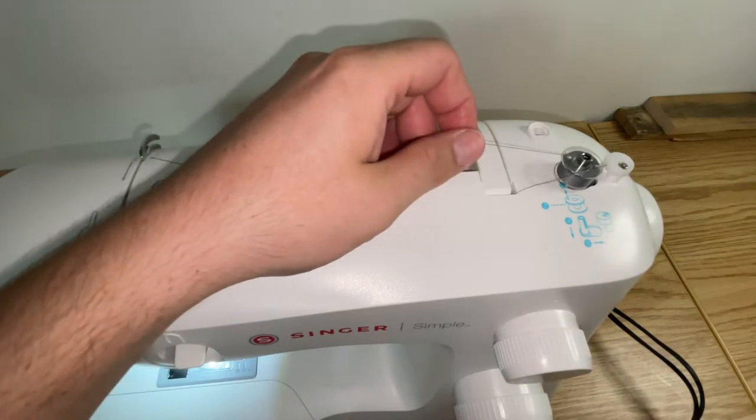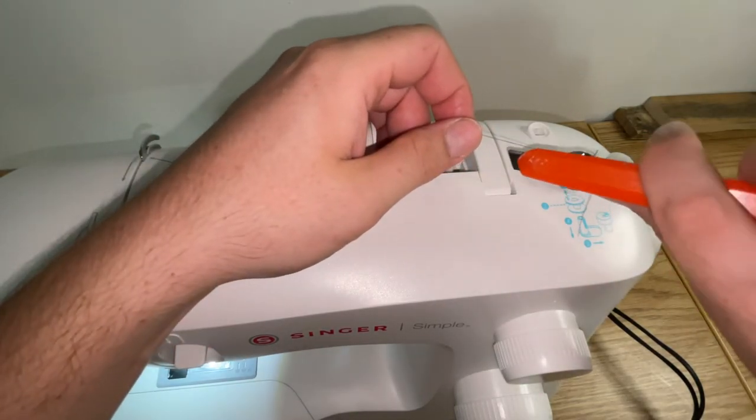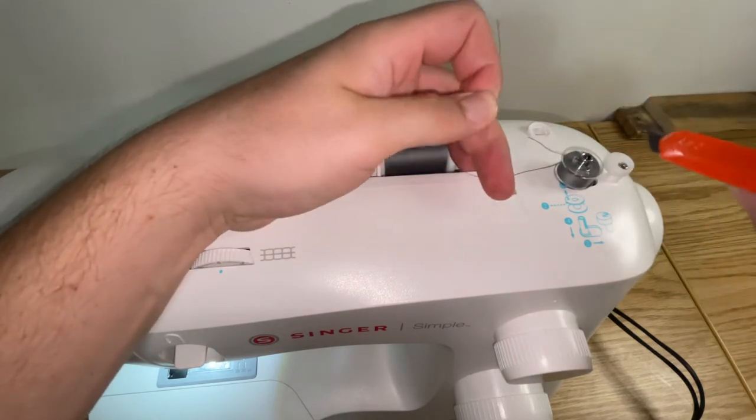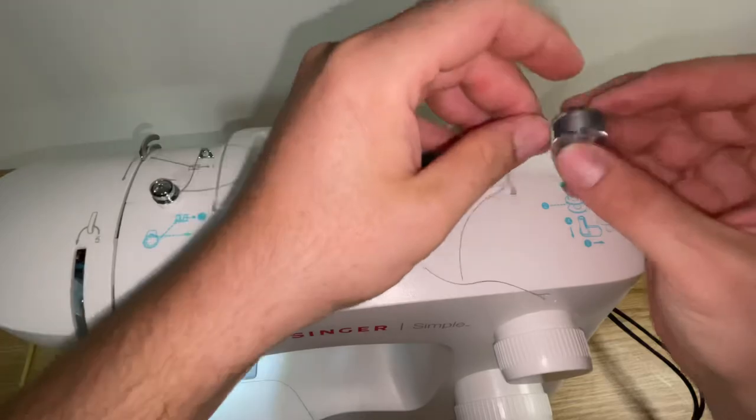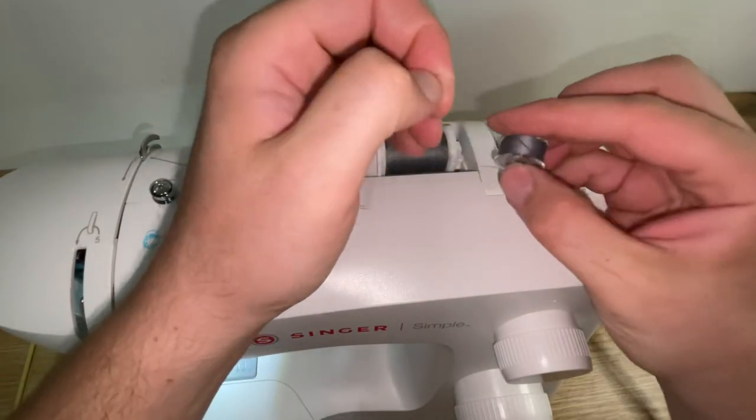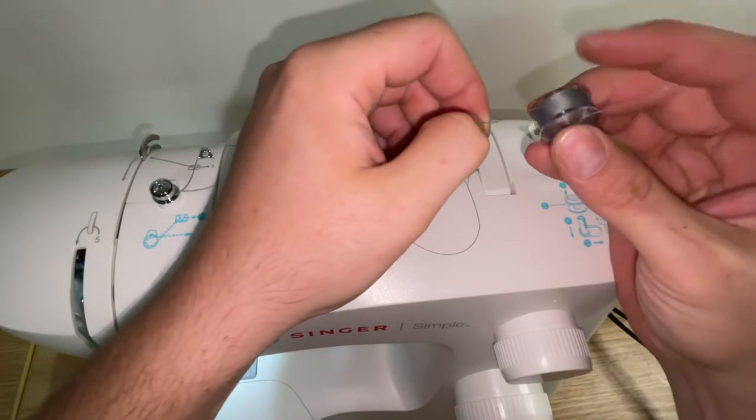So when we're done filling up our bobbin, all you're going to do, scissors or a knife, just cut it, lift it off, and you're good to go load it. We'll make another video for you on how to load it. Stay tuned for that.